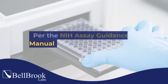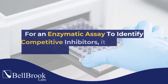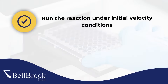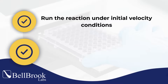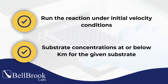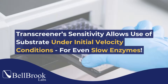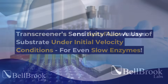Per the NIH Assay Guidance Manual, for an enzymatic assay to identify competitive inhibitors, it is essential to run the reaction under initial velocity conditions with substrate concentrations at or below the Km value for the given substrate. Transcreener's sensitivity allows use of substrate under initial velocity conditions for even slow enzymes.